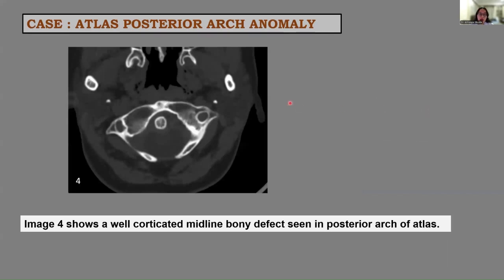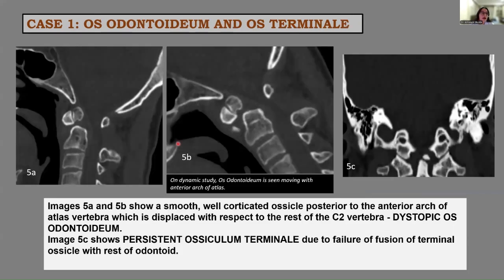Next is a case of atlas posterior arch anomaly, which shows a well-corticated midline bony defect seen in the posterior arch of atlas. Images 5A and 5B show a smooth, well-corticated ossicle posterior to the anterior arch of the atlas vertebra, displaced with respect to the rest of the C2 vertebra. On dynamic study, this ossicle was seen moving with the anterior arch of atlas, suggestive of dystopic os-odontoidium.